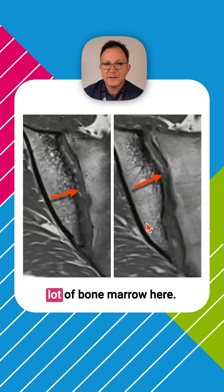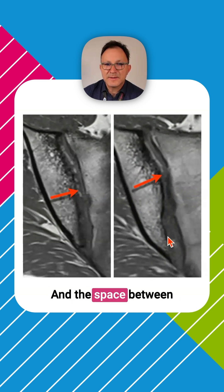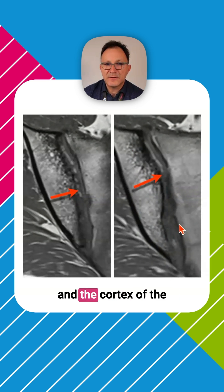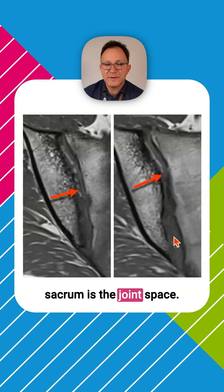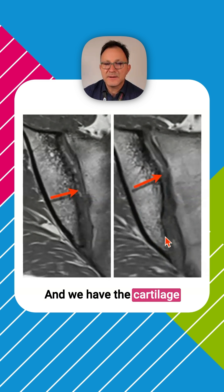So you see some of the trabeculae here and a lot of bone marrow edema here. And the space between the cortex of the ilium and the cortex of the sacrum is the joint space. And we have the cartilage in between here.